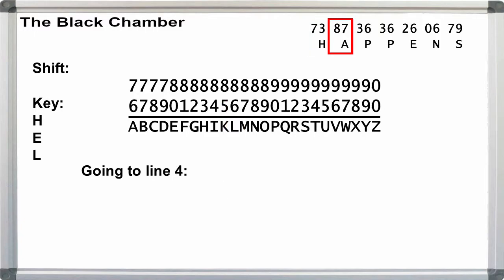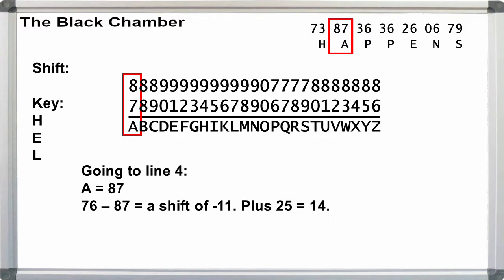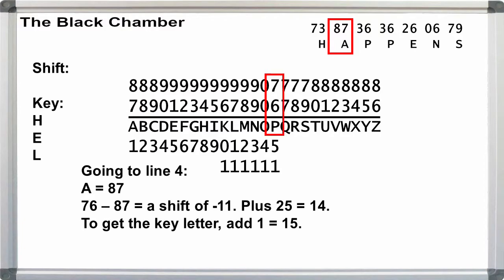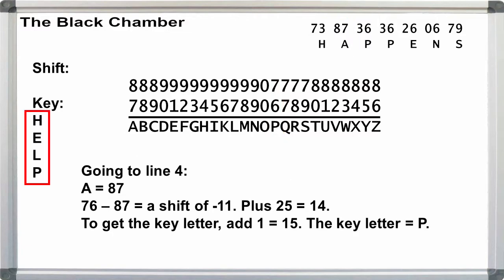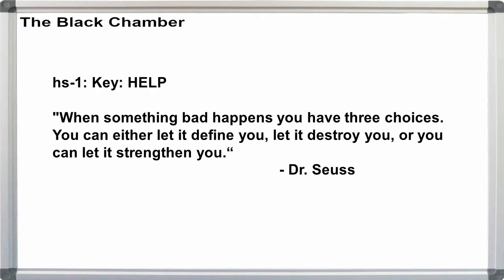Finally, A is 87. 76 minus 87 is minus 11. Add 25 to make it positive to get a shift of 14. Add 1 more to get our key letter, and that's the 15th letter in the normal alphabet, P. No reason to do the shift animation again, and we have our keyword, help. Following the rules for decryption in video episode 10, we get our plain text back out.